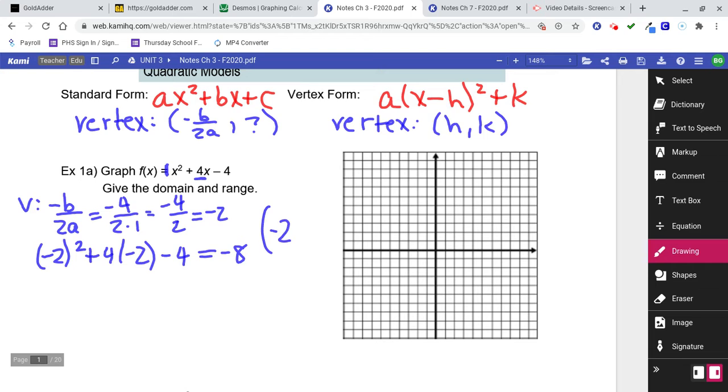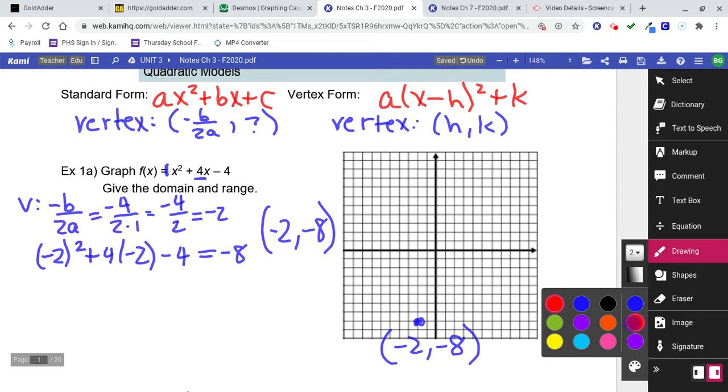Put those two things together. We know the vertex is at negative 2, negative 8. So graph the point, negative 2, negative 8. That's the vertex. So you should know that this is a parabola that opens up. Okay, we know it's a parabola that opens up. It's got a vertex at negative 2, negative 8.